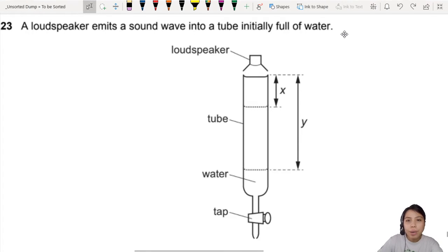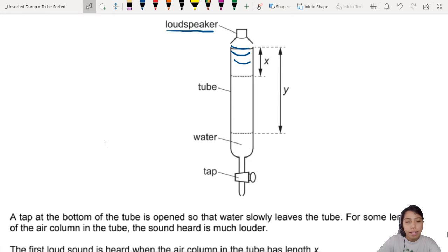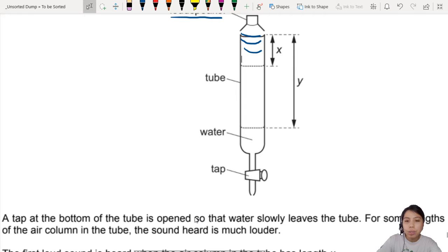A loudspeaker emits a sound wave into a tube full of water. This loudspeaker is going to give out some sound waves and send it down inside there. But what's happening here is an experiment about sending waves in air columns. A tap at the bottom of the tube is open so that water slowly leaves the tube. So the water level is dropping. For some lengths, the sound heard is much louder.